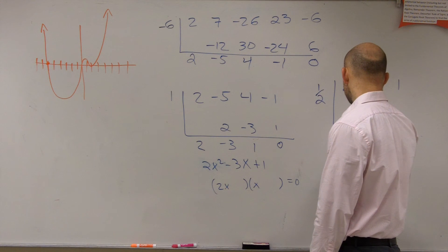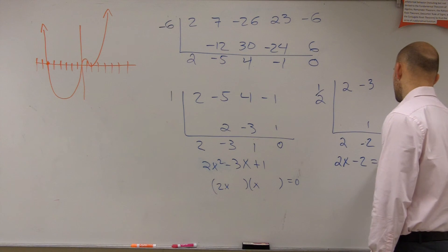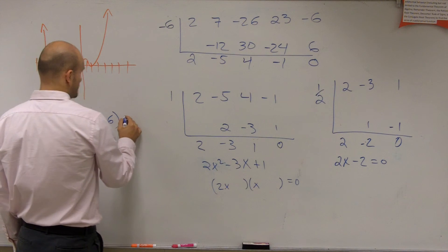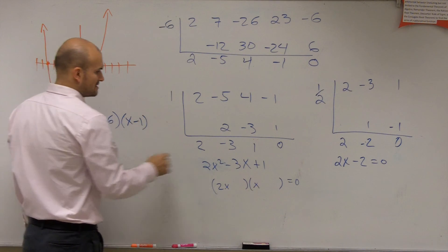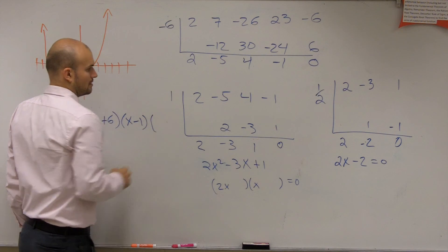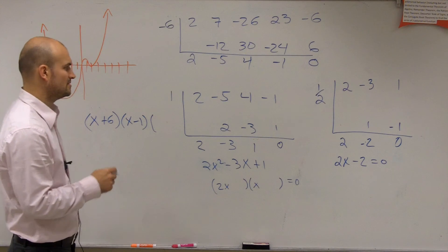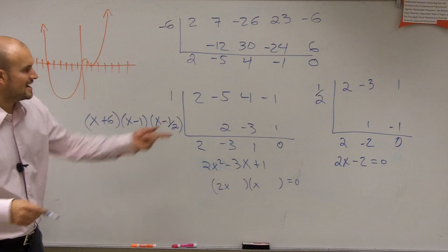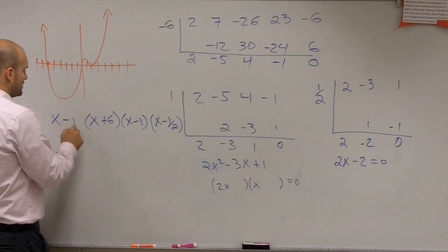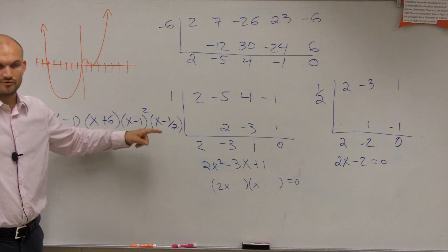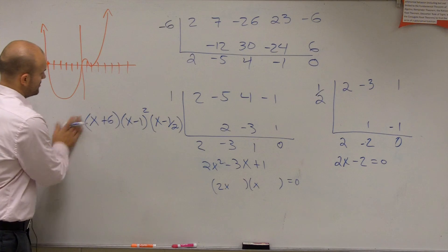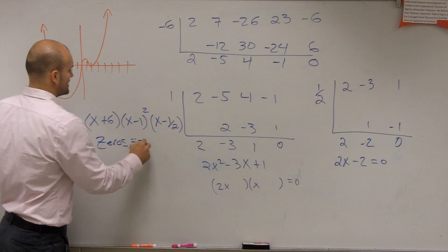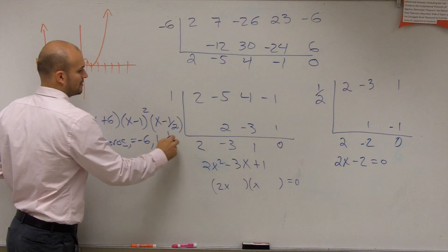We got, this becomes 2x minus 2 equals zero. So therefore, my factors, actually one half works. So therefore, my factors are x plus 6 times x minus 1 times, let's see, 2 divided by 2. So x minus 1 half. And then you could see actually x plus 1, or x minus 1 is a factor. It's actually a squared, because it's a multiplicity of 2. It rebounds from there. So x minus 1 is another one, so we actually just write it as a square. So there would be my result of factors, or my sets of factors. So my zeros are equal to negative 6, positive 1 with the multiplicity of 2 and 1 half.